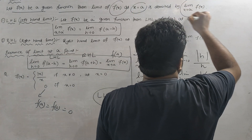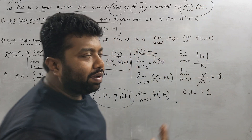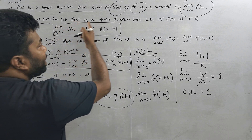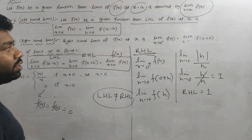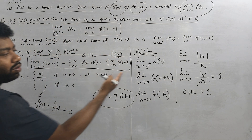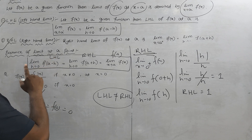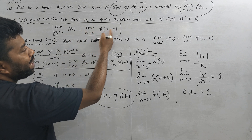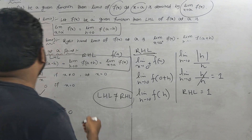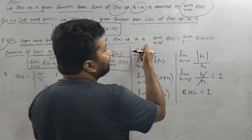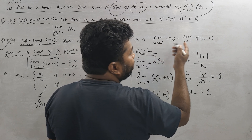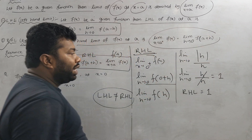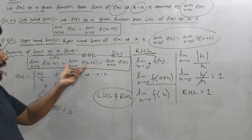Limit x tends to a — a is a point in f of x. So the left-hand limit of the function at x equal to a is: limit x tends to a minus of f of x, which equals limit h tends to 0 of f of a minus h. Similarly, the right-hand limit at x equal to a is: limit x tends to a plus of f of x, which equals limit h tends to 0 of f of a plus h. So LHL, RHL, and f of a.